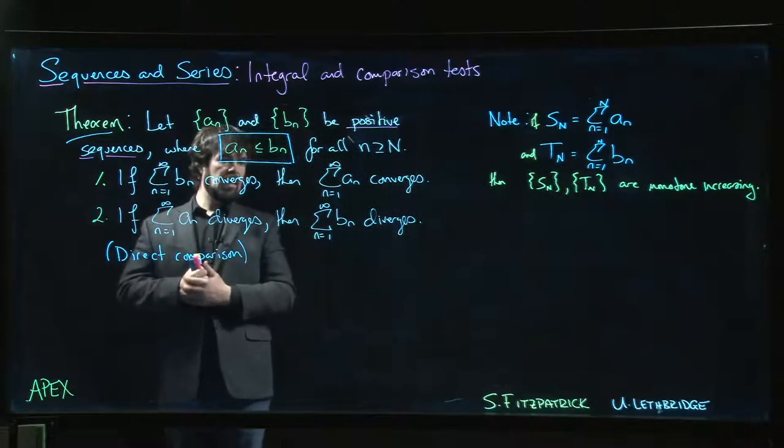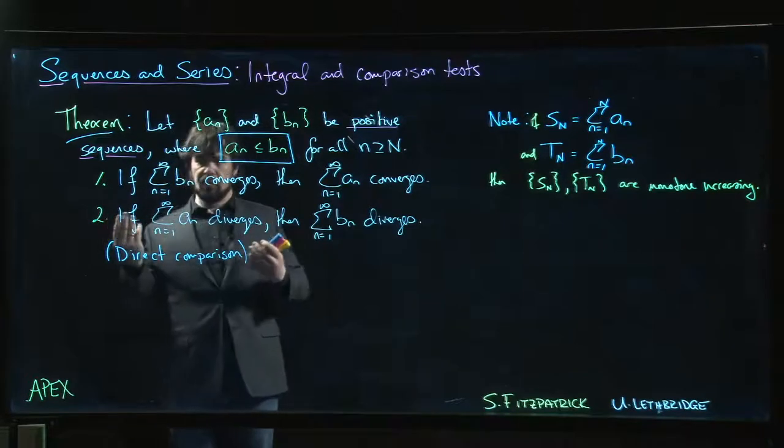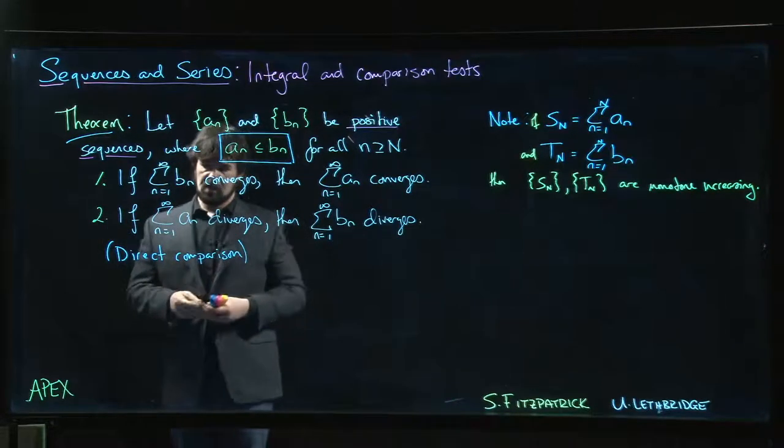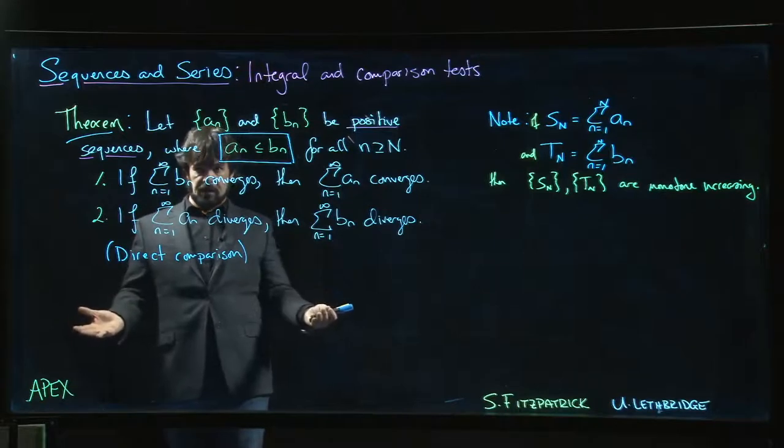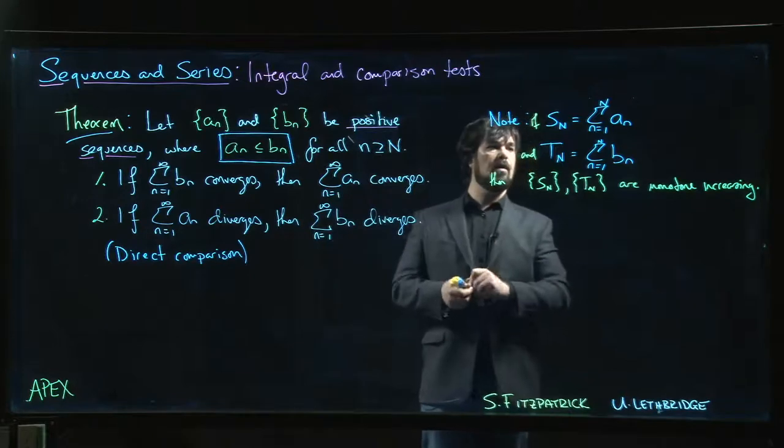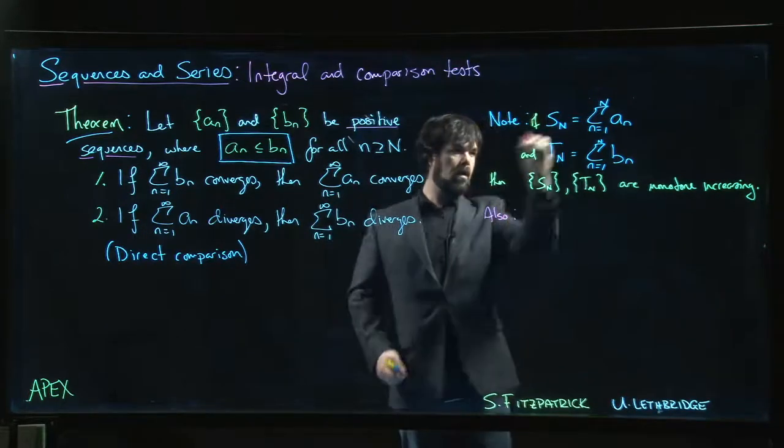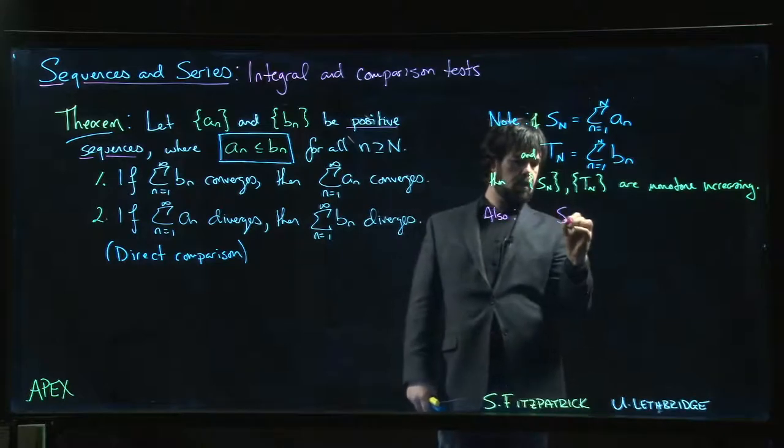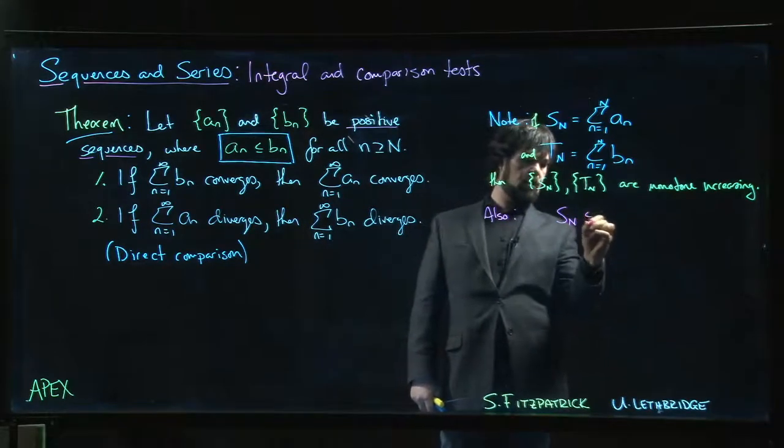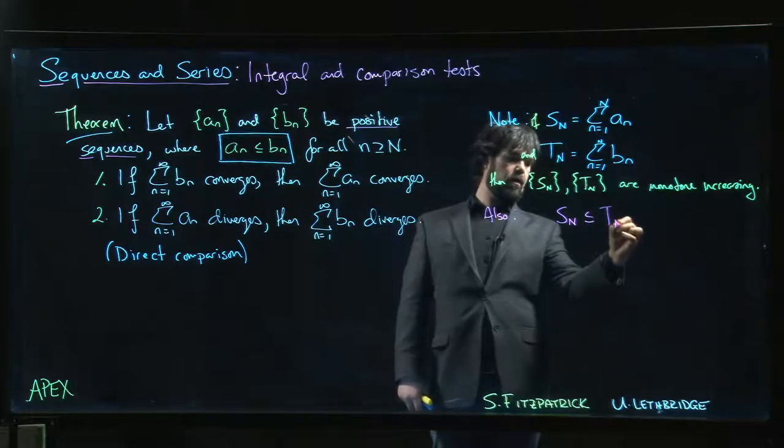This is a useful observation to make. One thing that tells us is that if we do have a divergent series, if this sum diverges, well it has to diverge to infinity. The other thing we notice is that S_n has to be always less than or equal to T_n.